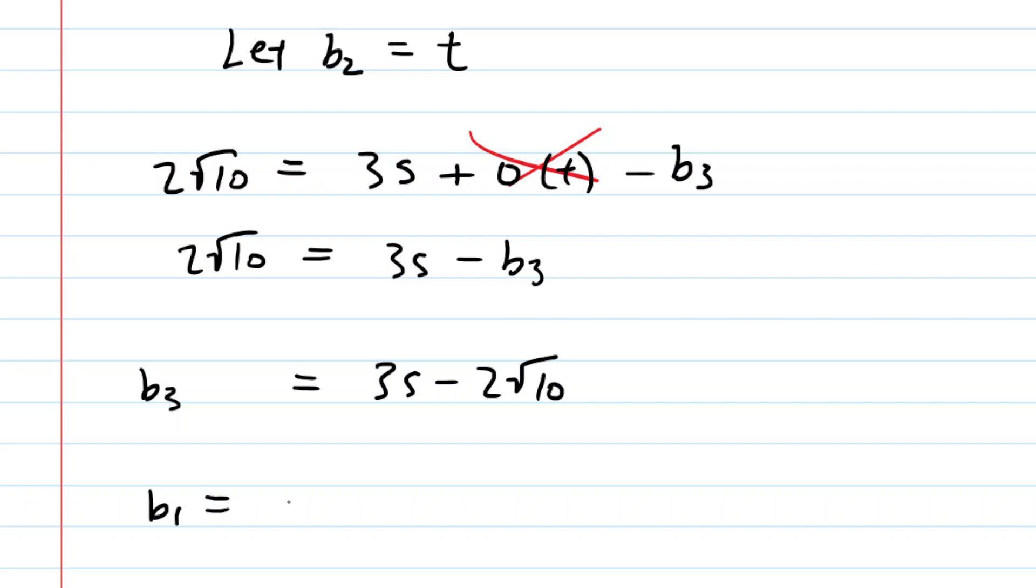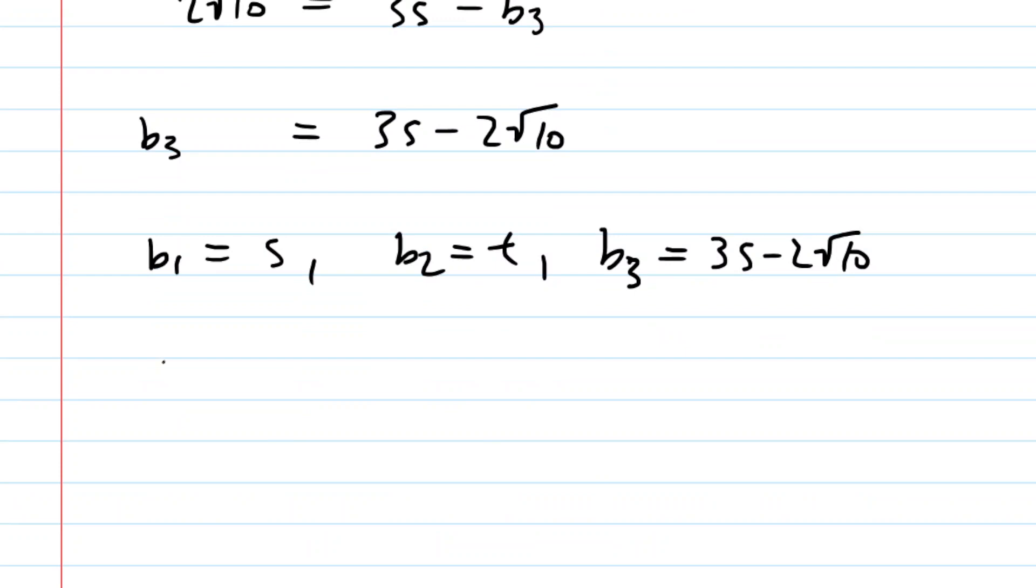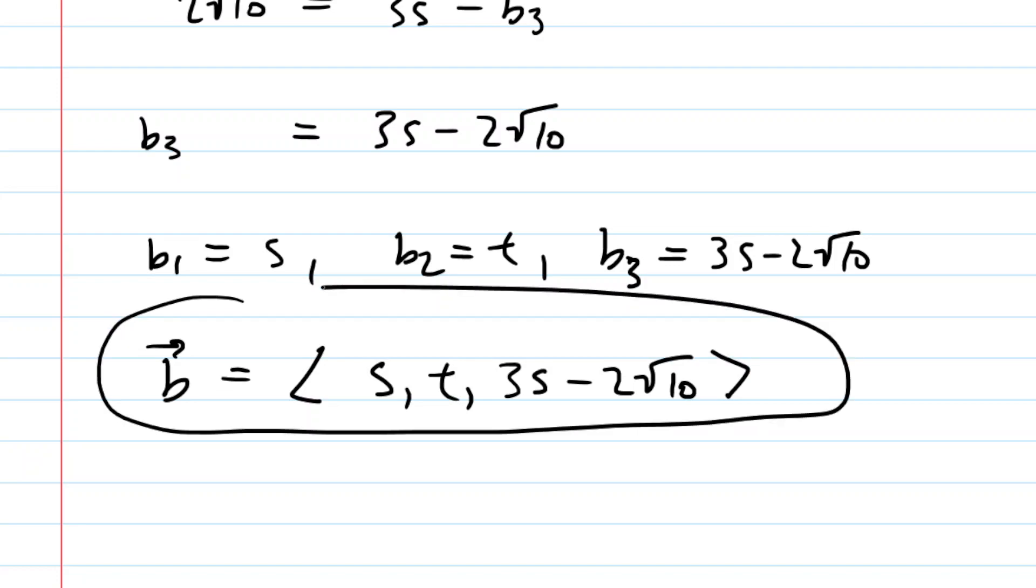So in summary, we said B1 was S, B2 was T, and now we know B3 is equal to 3S minus 2 square root 10. So the most generalized answer for vector B, if you were looking for that, would be the following. We would have S, T, and then the Z component would be 3S minus 2 square root 10. So this is the general answer for vector B.